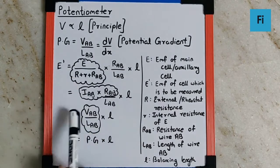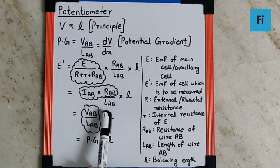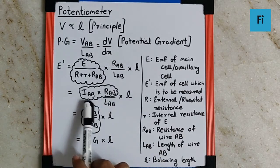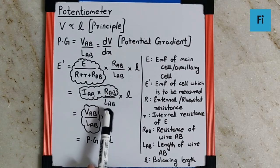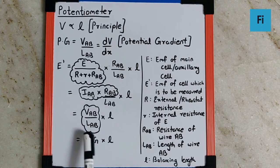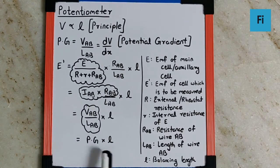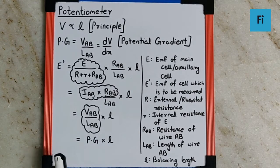So IAB into RAB by LAB into L, where IAB into RAB can be written as VAB by Ohm's law. So VAB by LAB into L, where again VAB by LAB can be written as potential gradient into length.